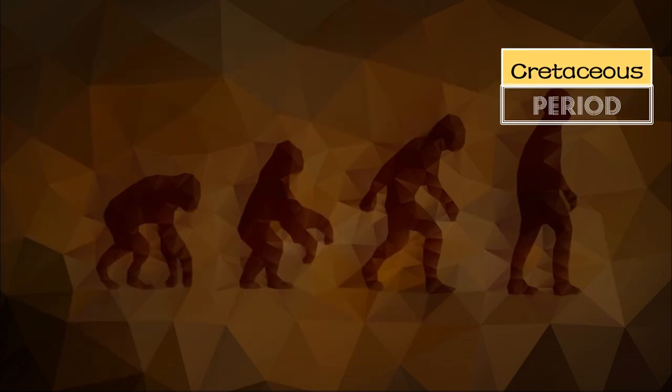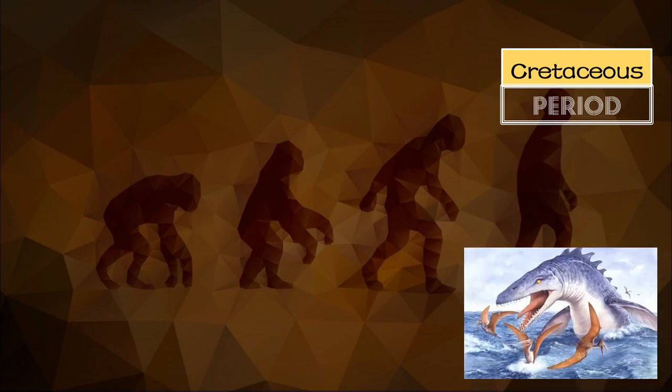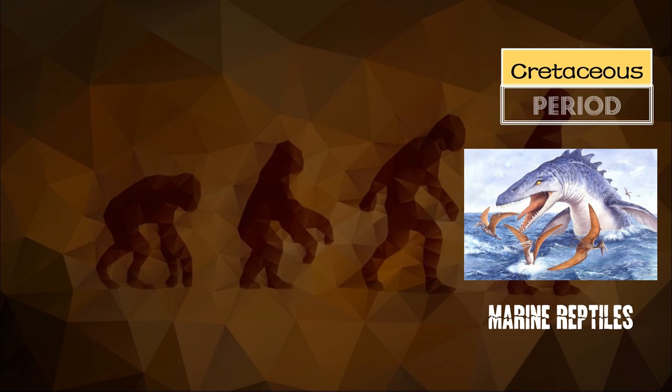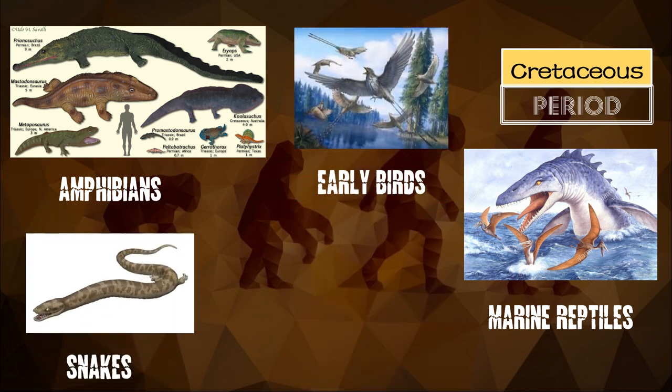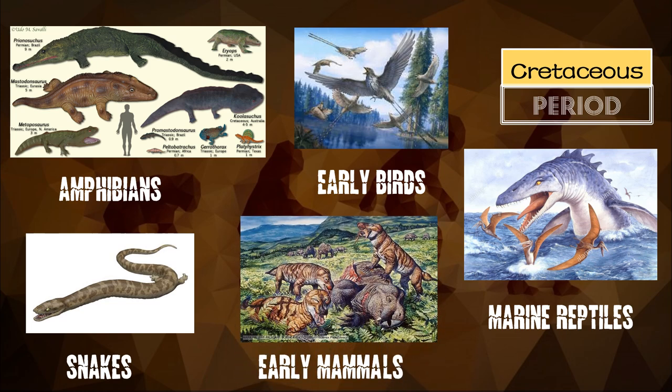The Cretaceous period was the final period of the Mesozoic era and extended from 144 million to 65 million years ago. Life forms in the Cretaceous period include dinosaurs, flying reptiles, marine reptiles, amphibians, lizards, crocodilians, snakes, early birds, and early mammals. If you look closely at the organisms present in the Cretaceous period, they are really dangerous.